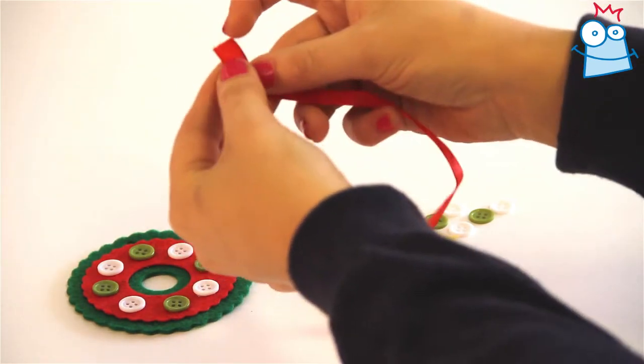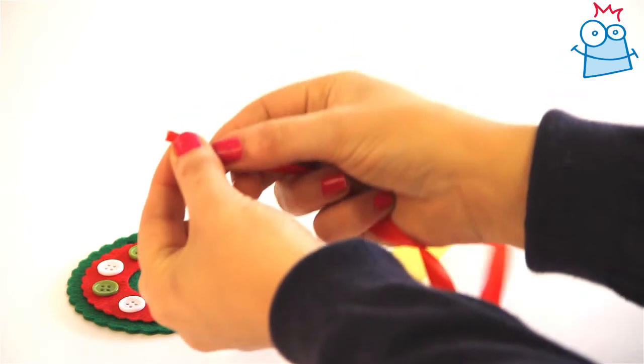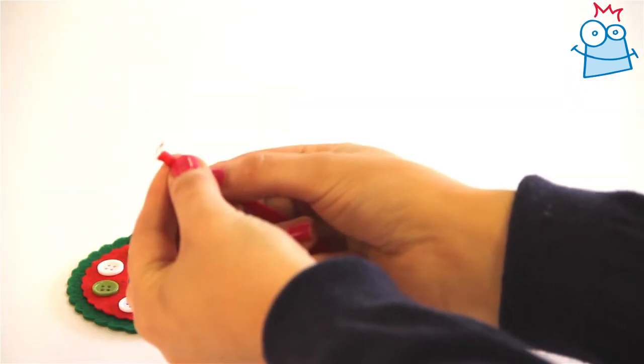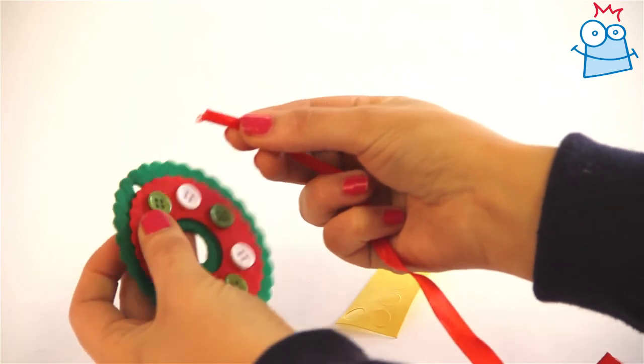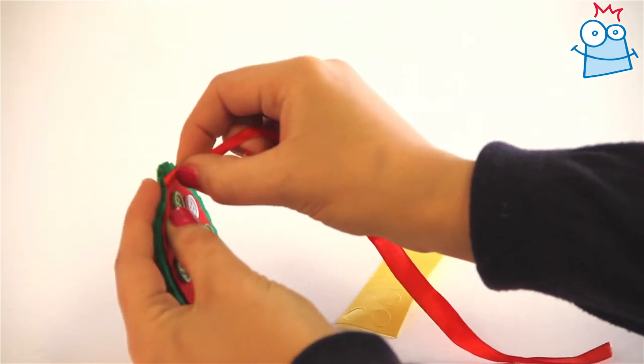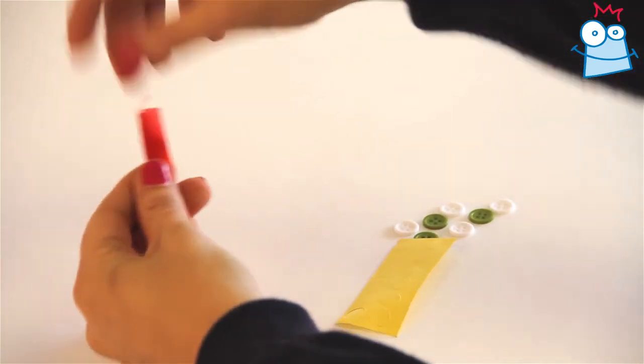Then fold one end in half to make it easier to thread. And carefully push it through the pre-cut hole in the top of the wreath like so. Pull the end through and match up the ends, and then simply secure it in a knot to finish.